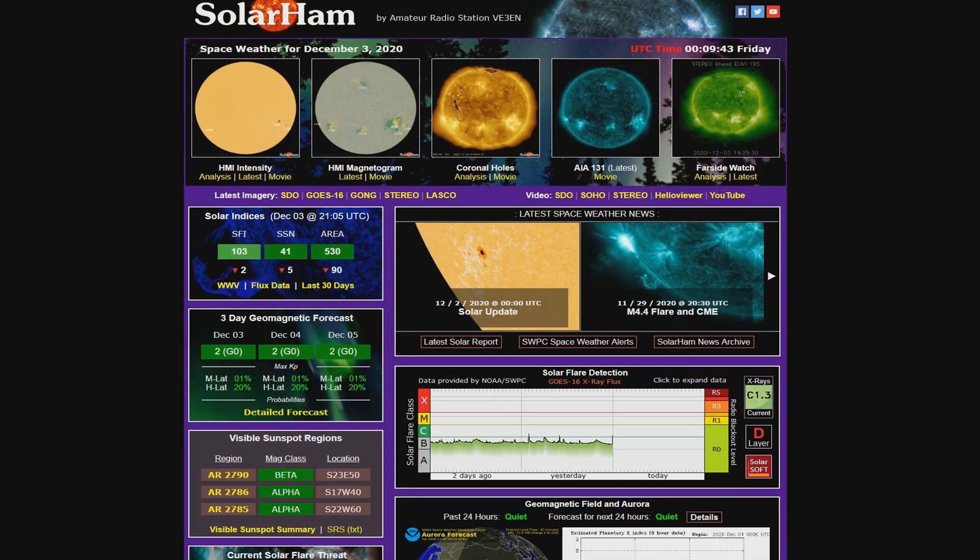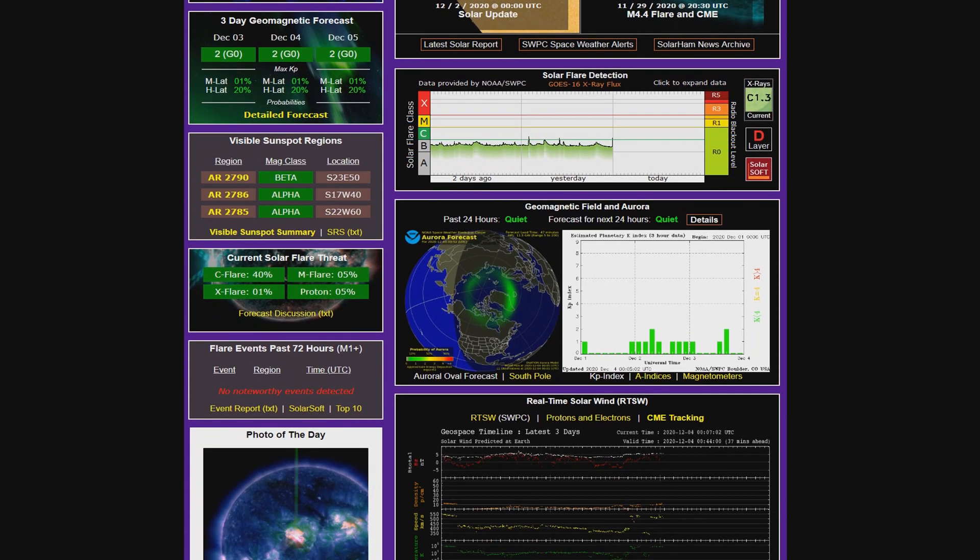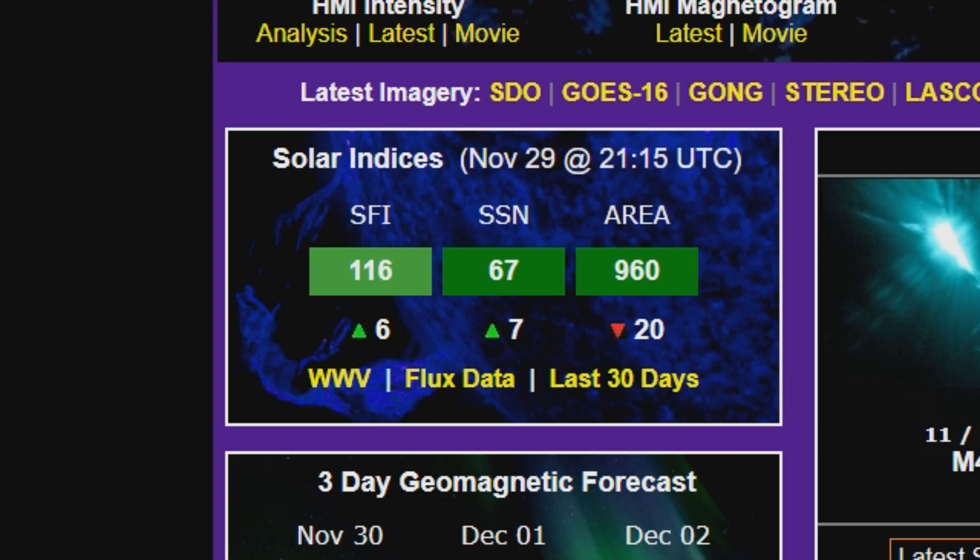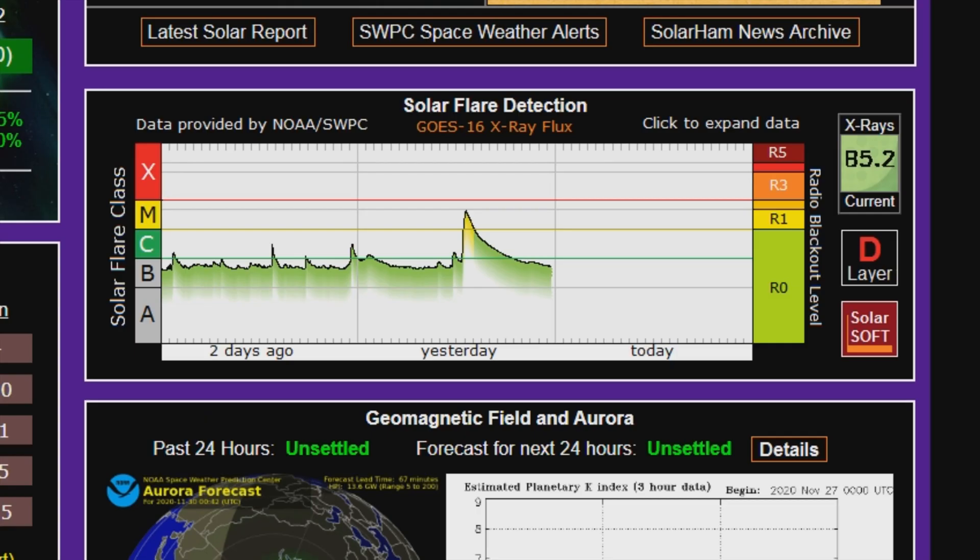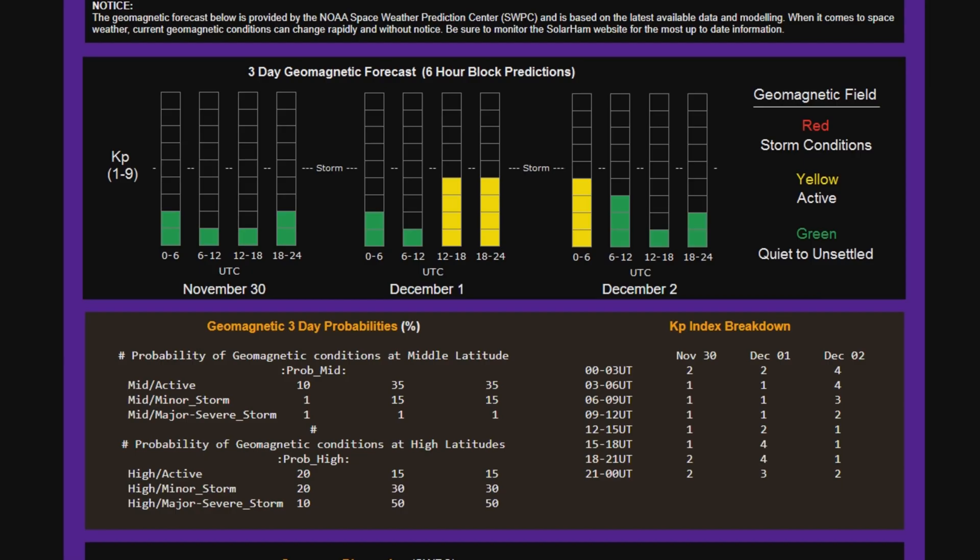Sites like Solar Ham give a good insight into the sun's current activity, presenting easy-to-consume solar weather. But what does it all mean? What's good for radio? And what's not?